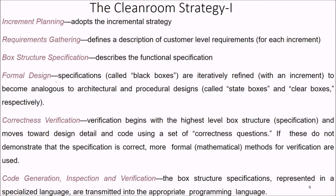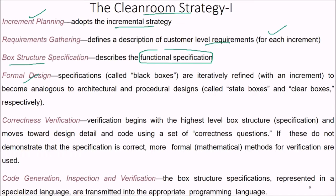The process paths include: increment planning, where we adopt an incremental strategy; requirements gathering, defining customer-level requirements for each increment; and box structure specification, which describes the functional specification. The formal design refines black boxes iteratively within each increment, and they become analogous to architectural and procedural design — referred to as state boxes or clear boxes.